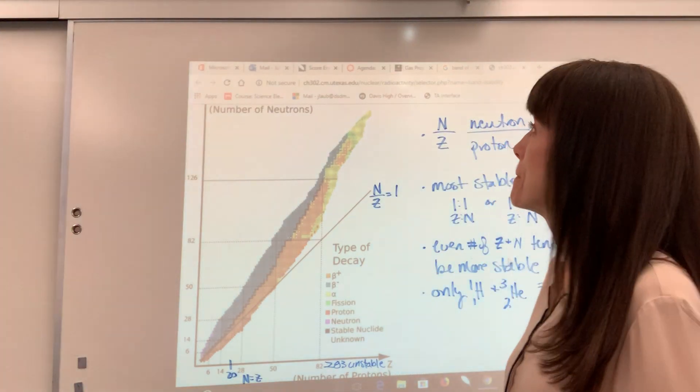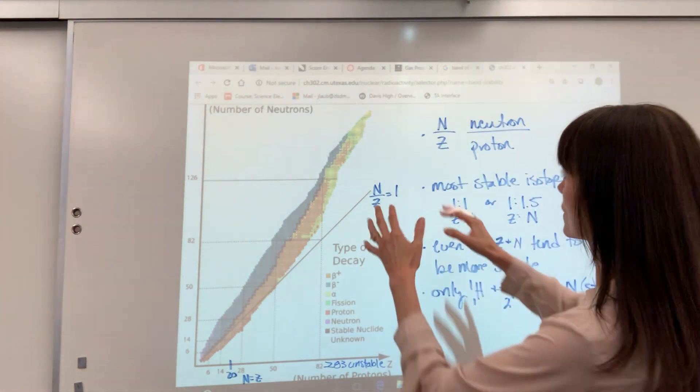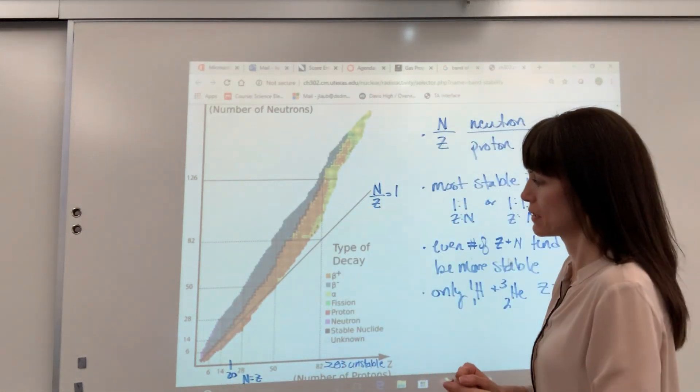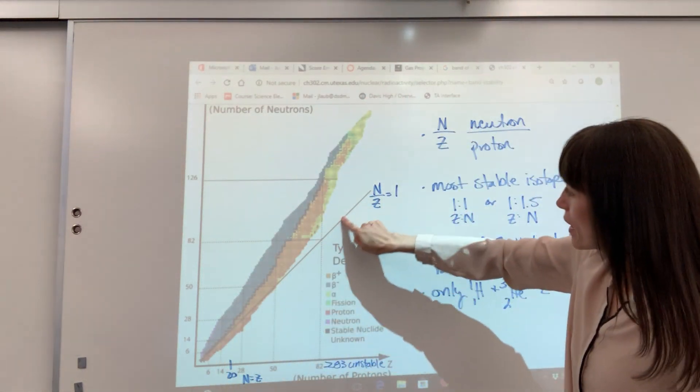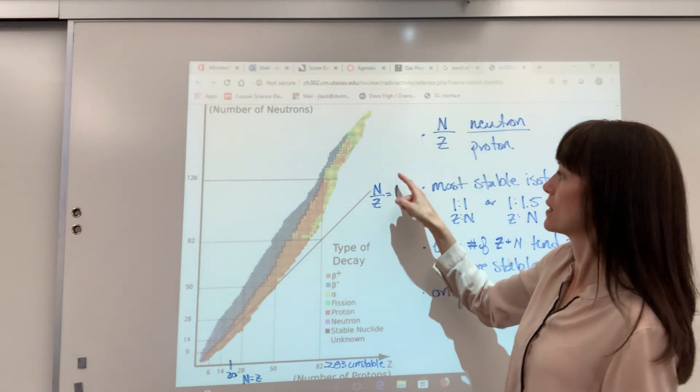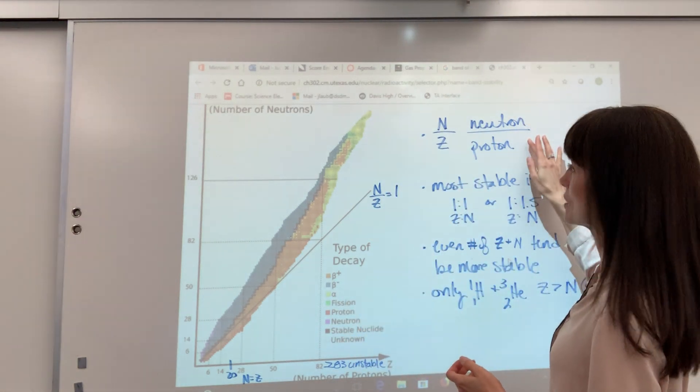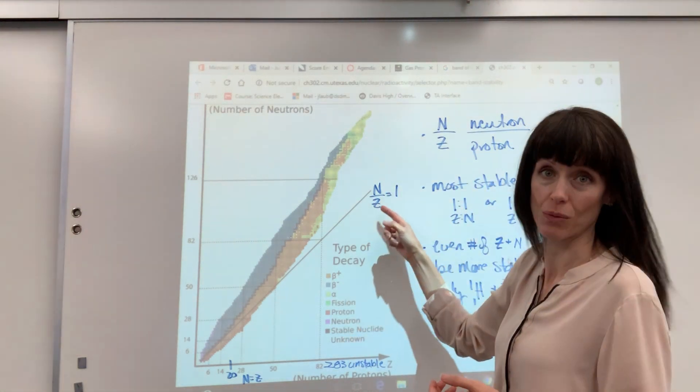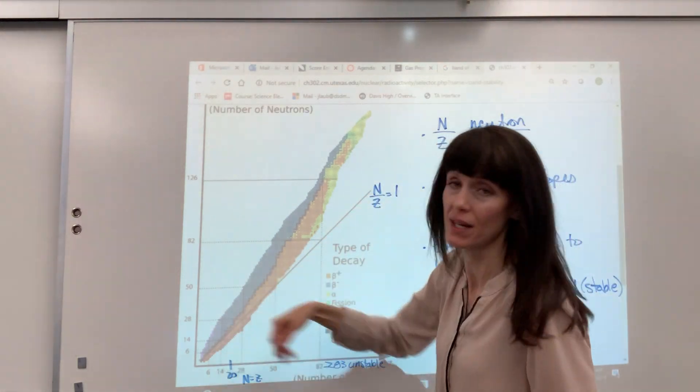Hi, let's talk about the band of stability. So this right here is your band of stability. Now see this black line right there that is showing the N to Z, which is the neutron to proton ratio equal to one. So that's what we're comparing this against.